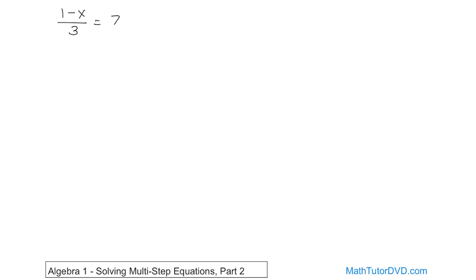If you tried to get rid of this 1, like if this 3 weren't here at all, what would you do? You would have to subtract 1 from both sides, because this is a positive 1, so you'd have to subtract 1 from both sides, all right?